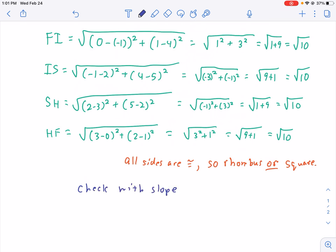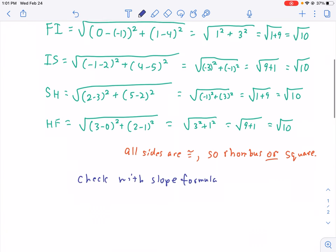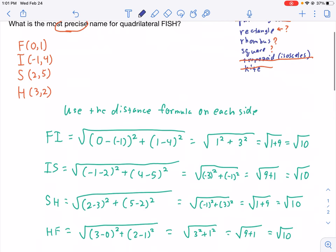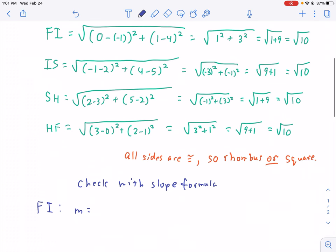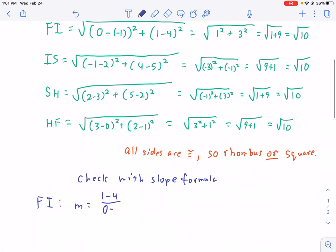We check using the slope formula. For the slope formula, we'll take the y-coordinates and put them on top and the x-coordinates and put them on the bottom. So, it looks like this is going to be negative 3 over 1.